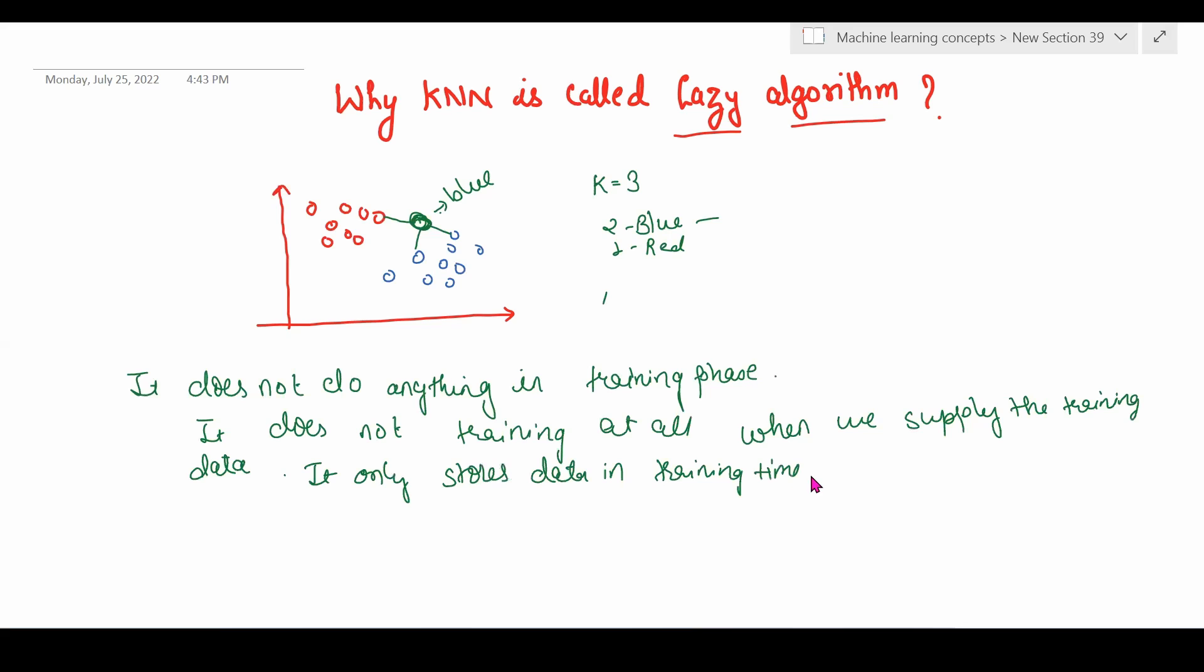When a new test data point comes, it starts finding the distance from other data points and does all the computations at that time. All the computations happen during testing time when we apply unseen data.